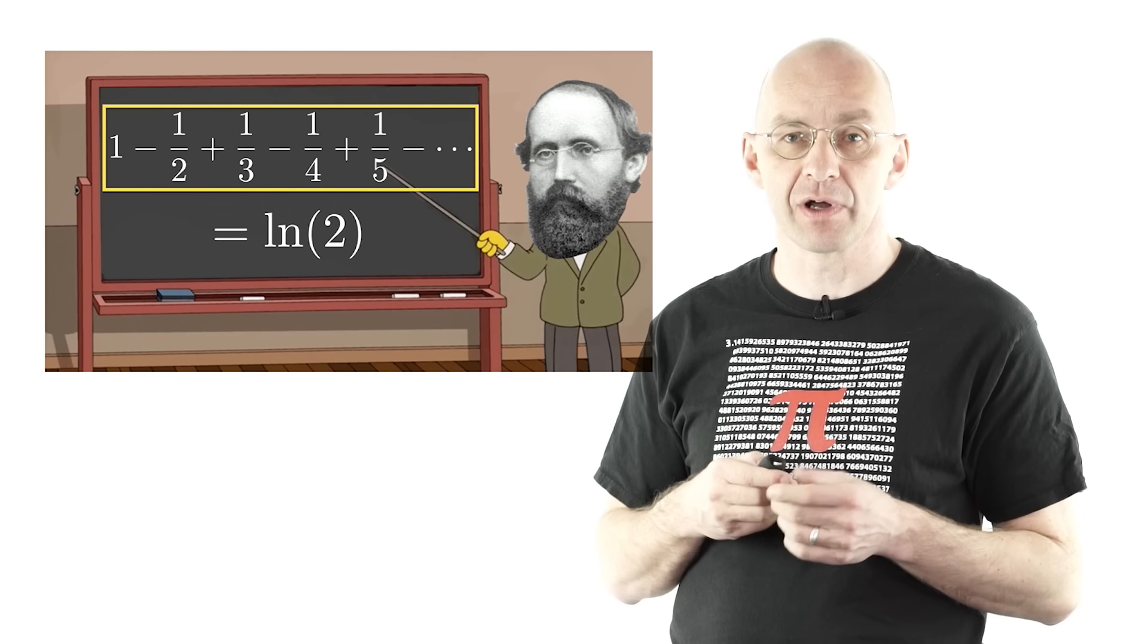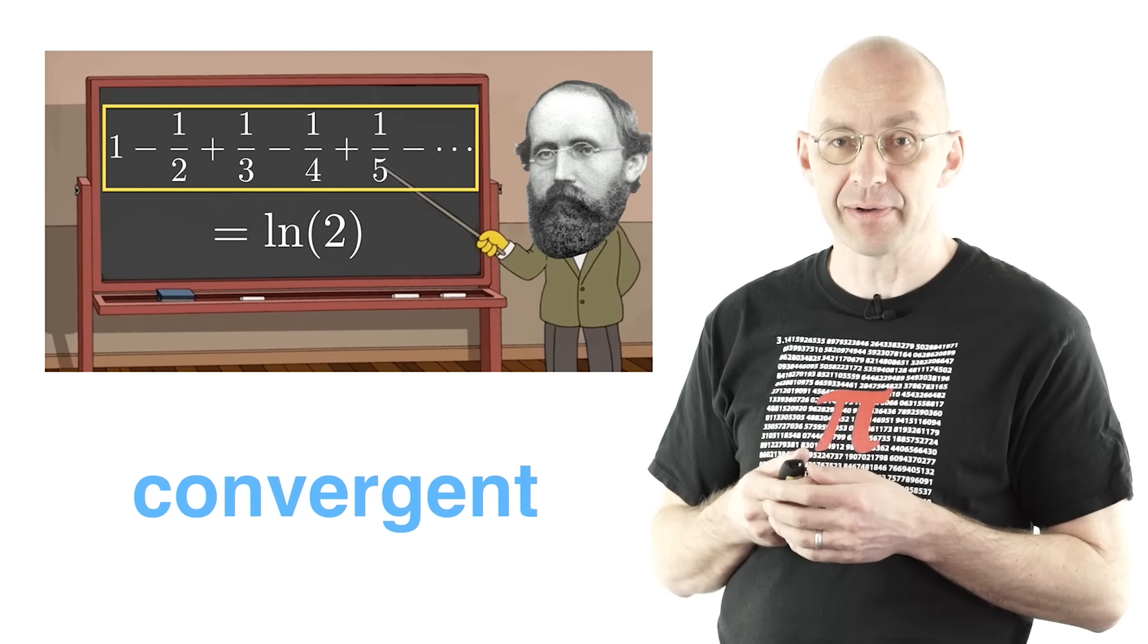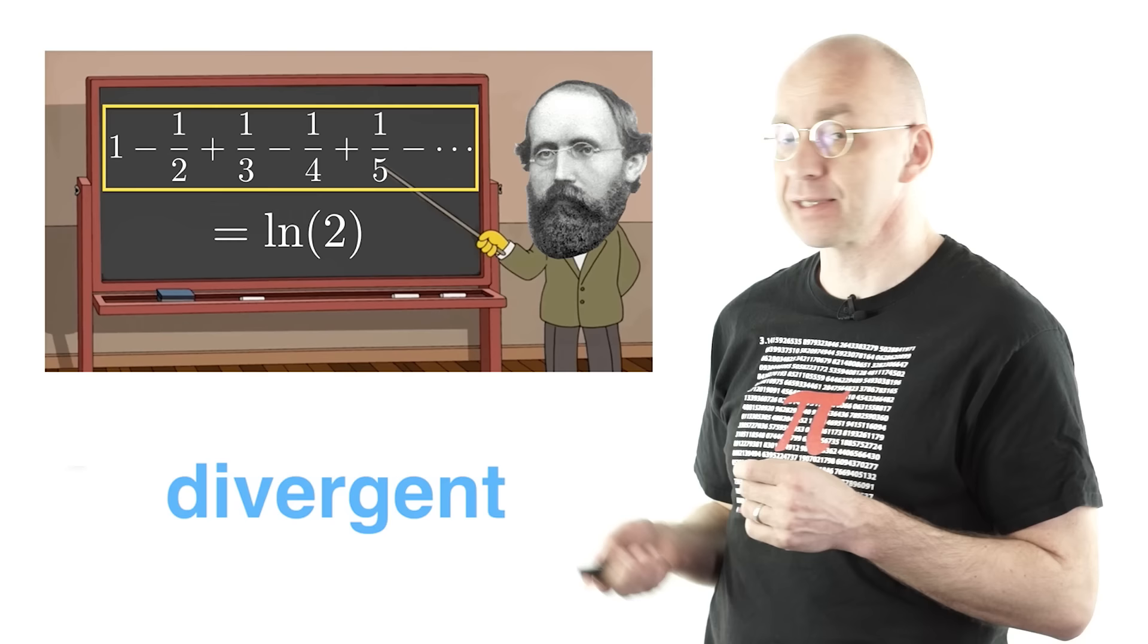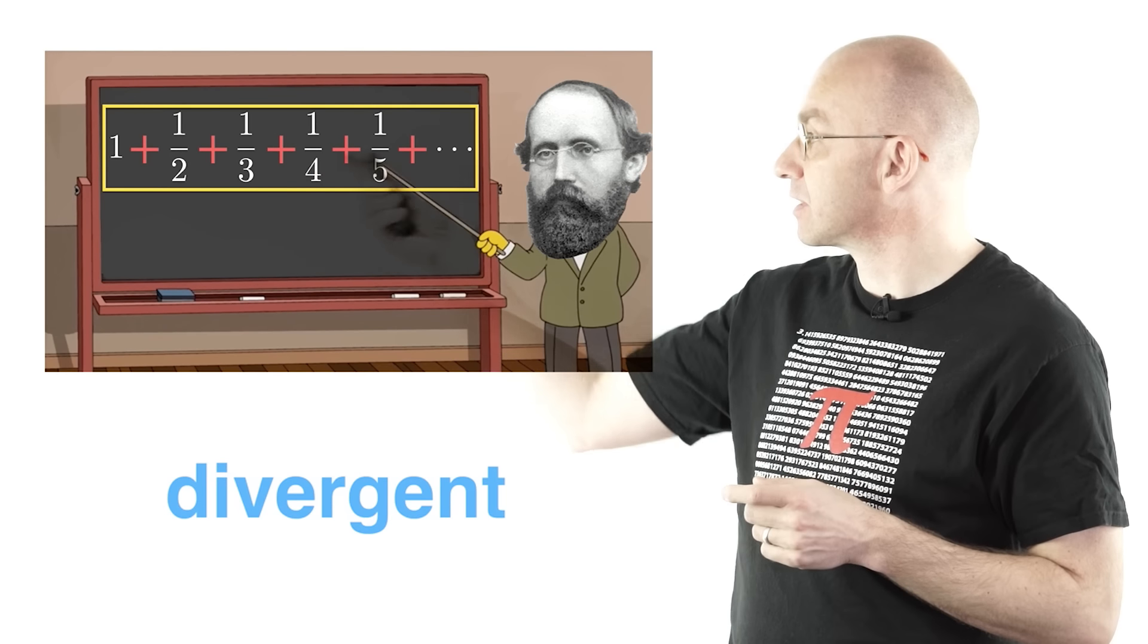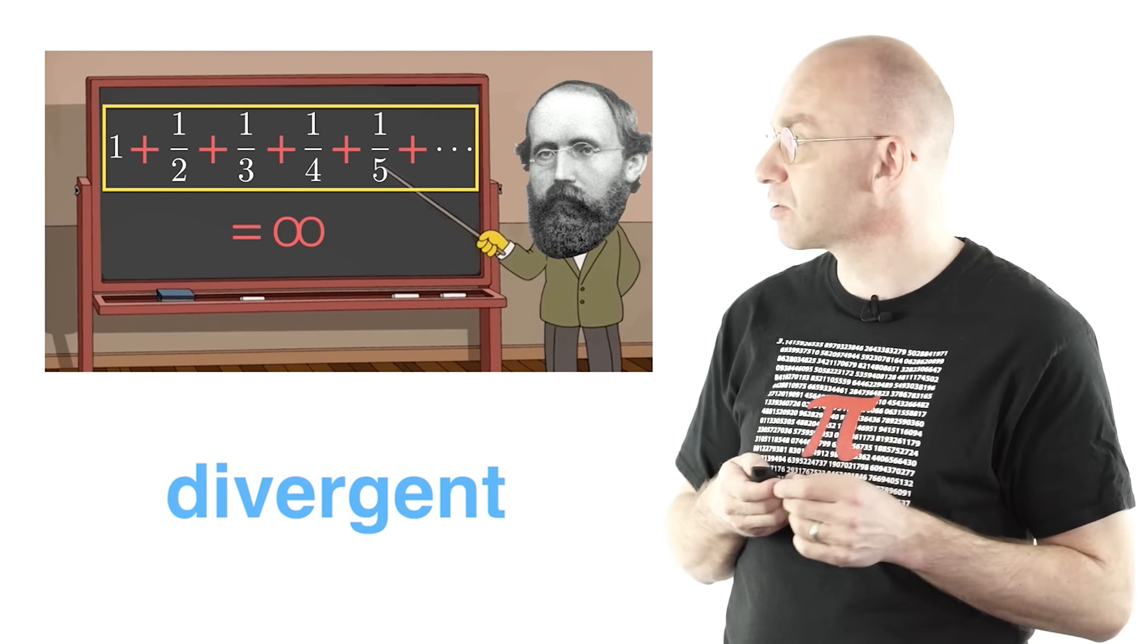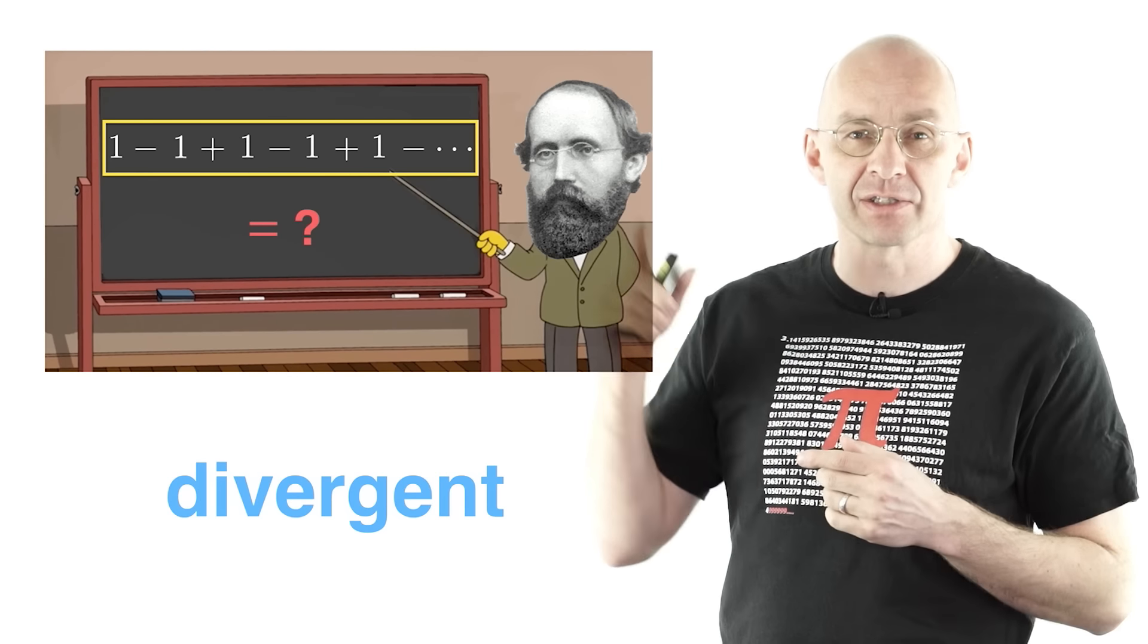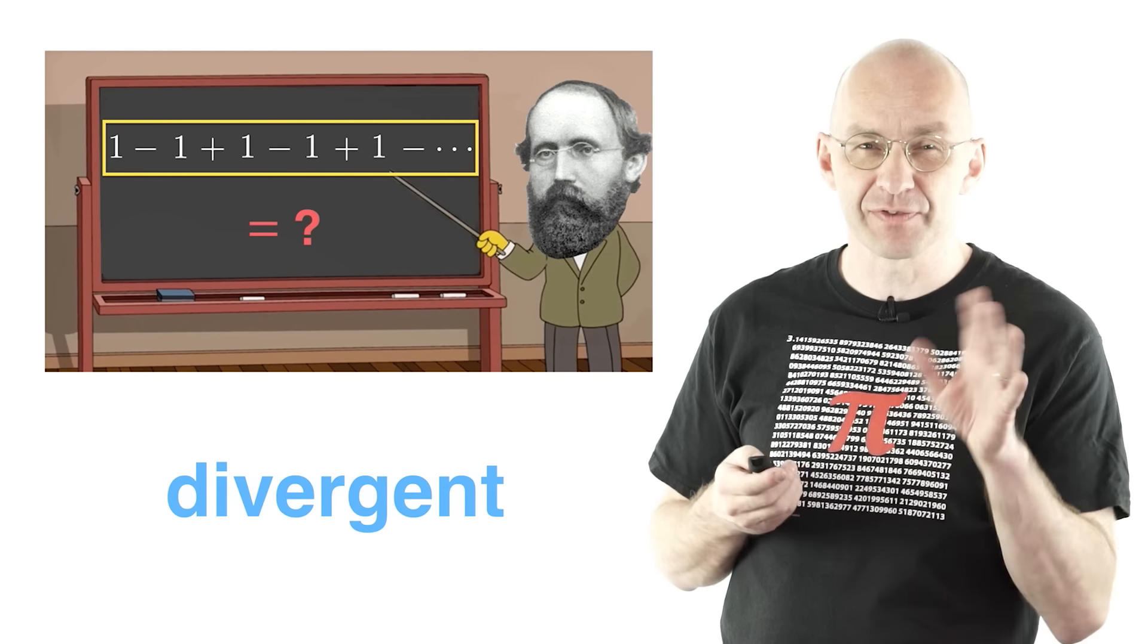So this is an example of a convergent series, a series that actually has a sum which is a finite number. Now there's also lots of series that don't converge, and they're called divergent. For example, if we replace all the minuses in here by pluses, I already showed in that other video there, that this adds up to plus infinity. But there's other types of divergence. For example, if we take this guy there, it's 1-1 plus 1-1. The partial sums here are 1, 0, 1, 0, 1, 0. They don't settle down to anything, not finite, not infinite. That's also divergent.